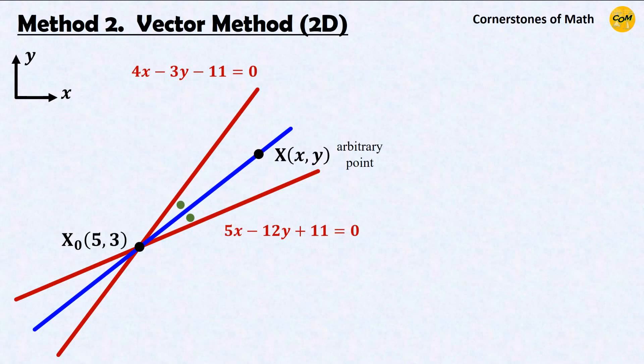Now let's solve the same problem with a different method: the vector method. In this method, I will denote an arbitrary point on the angle bisector as point x, using small x and small y, because that does not create much confusion in this method. I will also call this intersection point x0.